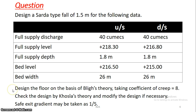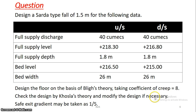Design the floor on the basis of Bligh's theory, taking the coefficient of creep equal to 80. Check the design by Khosla's theory and modify the design if necessary. The exit gradient may be taken as 1 in 5. So we design using Bligh's theory with coefficient of creep = 80, then check using Khosla's theory and apply modifications. The safe exit gradient value is 1 in 5.